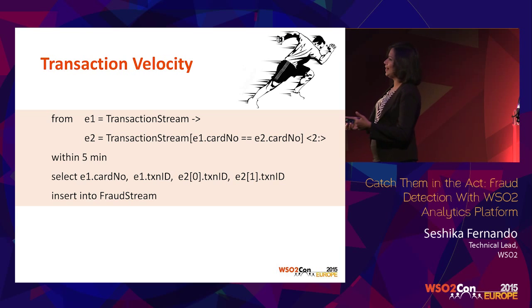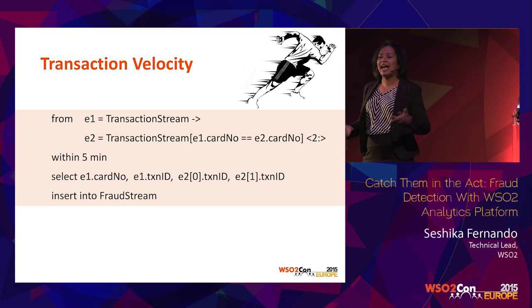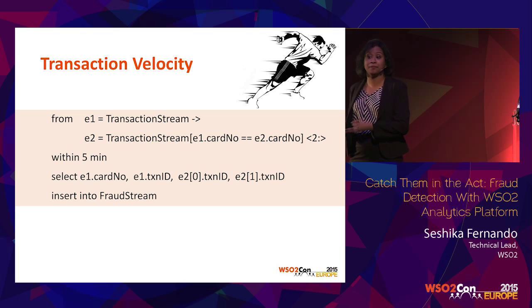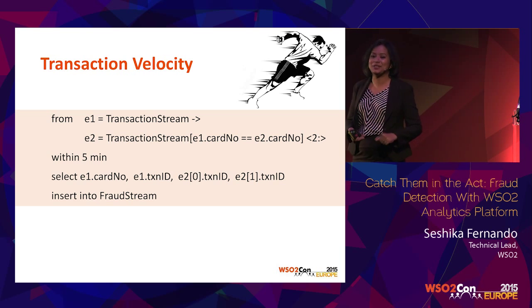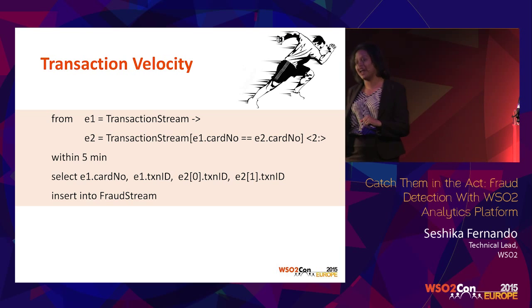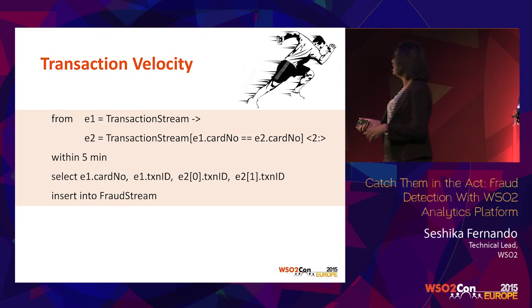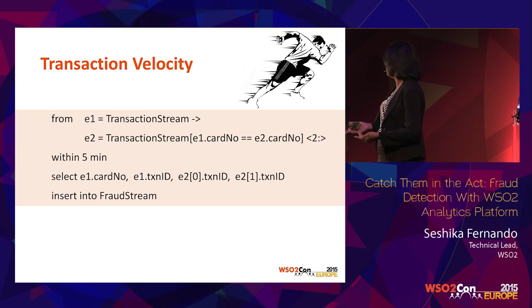Normal transaction velocity would be very different for different businesses. For example, a bookstore versus a jewelry store. My husband and I read a lot, so we buy books at least once a month - our transaction velocity for books is once a month. For expensive jewelry, I've got two rings from the time I've known him, so transaction velocity for expensive jewelry is not as fast. What we're doing here is converting that velocity into a Siddhi query - it's very simple.